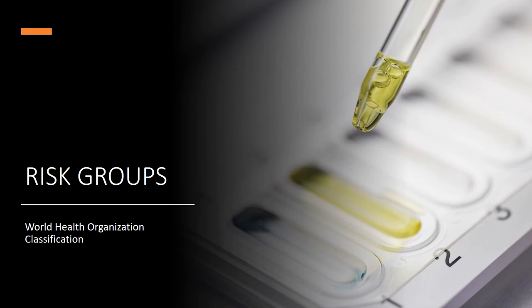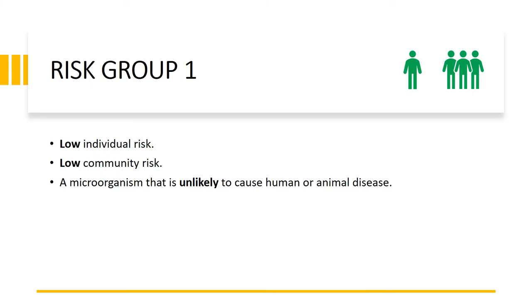We now move on to risk groups as classified by the World Health Organization. Risk group one poses a low individual risk and low community risk. It is a microorganism unlikely to cause harm in humans or animals — for example, a bacterium which may cause mild morbidity but no mortality. Risk group one infectious agents can be treated using normal antibiotics and therapeutics.